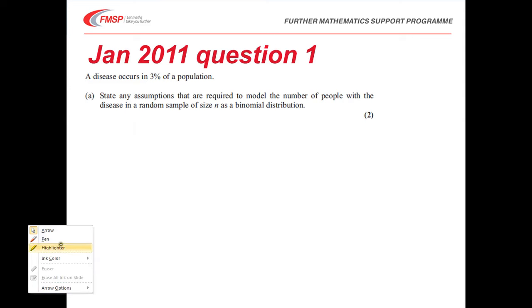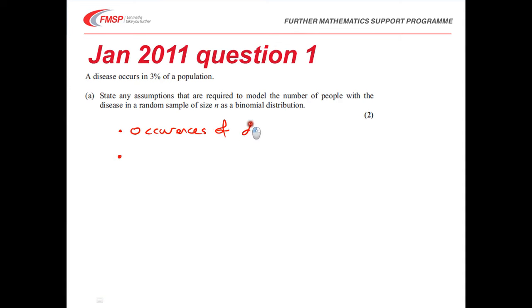We're told that it's got a fixed number of trials anyway, so we don't really want to be using that one. It's the other two statements that we need to be aware of. One of them is that the occurrences of disease are independent. That's one of the key features of a binomial.